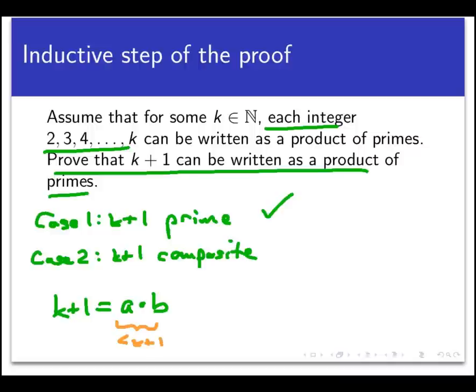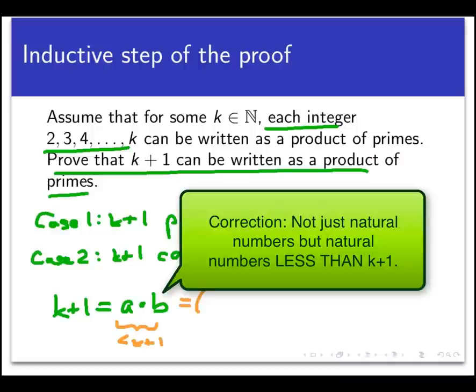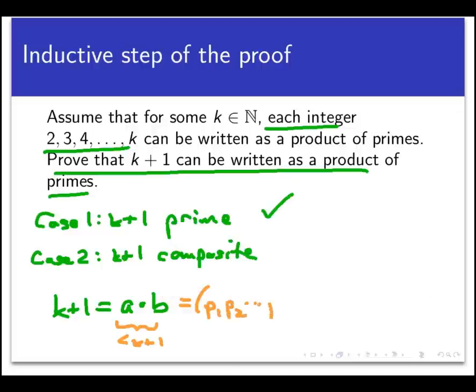And so here's where the inductive hypothesis comes in. Because a and b are natural numbers, the inductive hypothesis says that each one of them can be factored into a product of primes. Let's say that a is factored into the product p1 times p2 times p3 and so on up to p sub x. And all those p's are prime numbers. And similarly, b can be factored into a bunch of primes, let's say, q1, q2, and so forth up to q sub y.